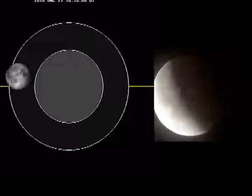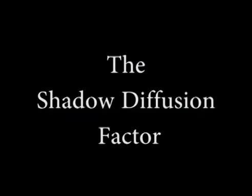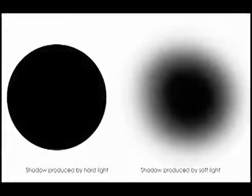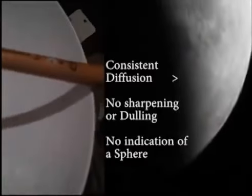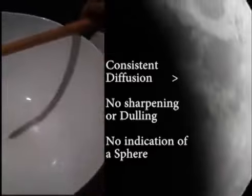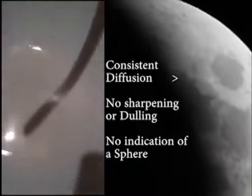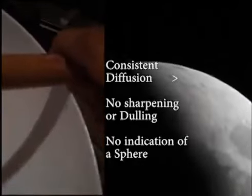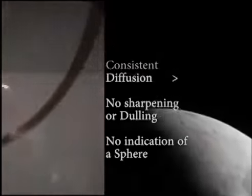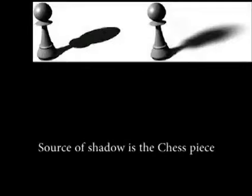Which brings us to our next factor: the shadow diffusion factor. Note the shadow is more crisp on the edge of the bowl than it is in the lowest portion of the bowl, and sharpens as it rises back up to the edge or the source of the shadow. Note also that on a sphere, the shadow is most diffused or scattered around the edges as the sphere's surface recedes, and it is the most sharp or defined on the closest portion of the sphere. This is because the closer the source of the shadow is to the surface, the more defined its edges.